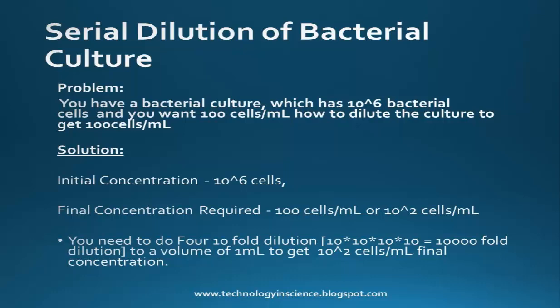Let's work through a problem on serial dilution of bacterial culture. You have a bacterial culture with 10 to the power 6 cells per ml and you want to obtain 100 cells per ml. The required dilution is 10,000-fold, achieved by four 10-fold dilutions (10 × 10 × 10 × 10) to a final volume of 1 ml, giving 10 to the power 2 cells per ml.